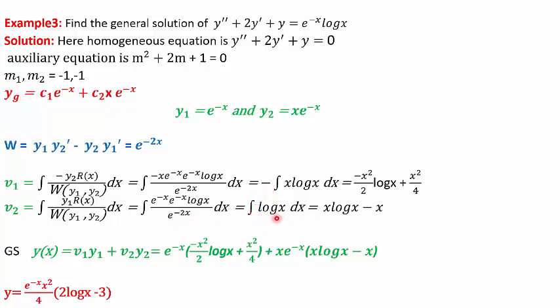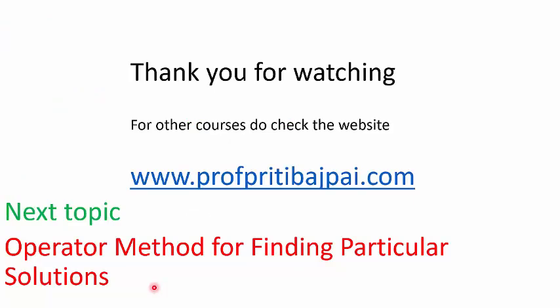The integral of log(x) is x·log(x) − x. Substituting v1, y1, v2, and y2 into the formula for the general solution and simplifying, we get y = e^(−x)·(x²/4)·(2·log(x) − 3). Thank you for watching. For other courses, you can check my website www.profpritvajpayee.com. The next topic is the operator method for finding the particular solution.